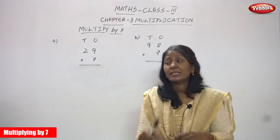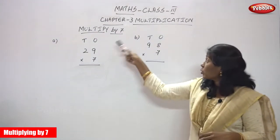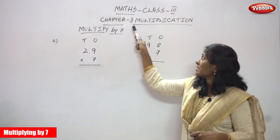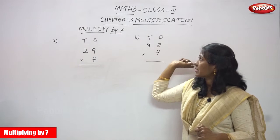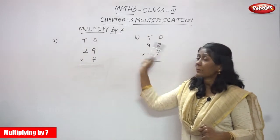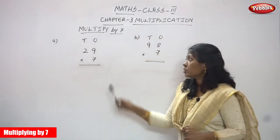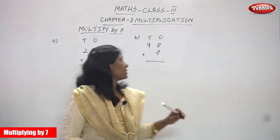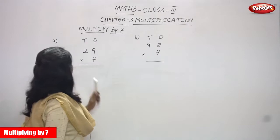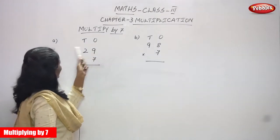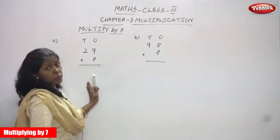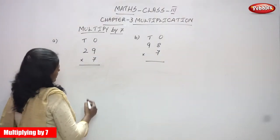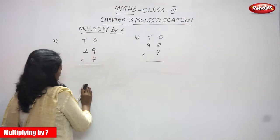Hi, welcome you all to Pebbles. In today's class we are going to see chapter 3, multiplication multiplied by 7. We are going to multiply a 2-digit number with a single digit number.